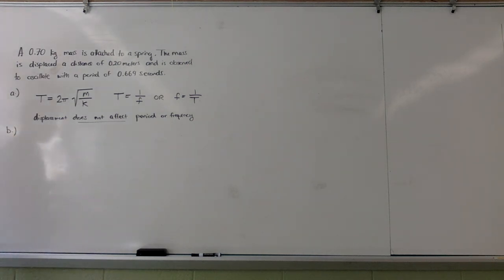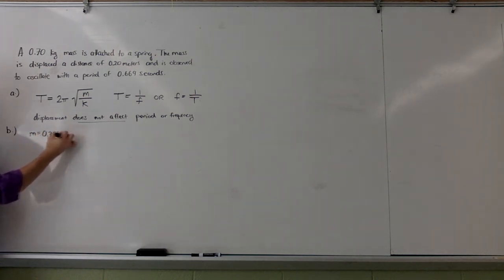Here's where my equations will come in handy. My equation that involves my known information is period is 2 pi times the square root of m over k. From my original problem statement, I have mass is 0.7 kilograms. I have a period of 0.669 seconds. And I'm looking for my spring constant.